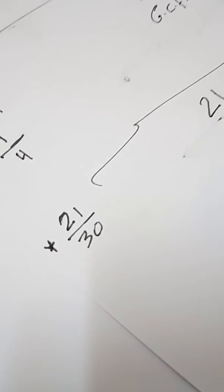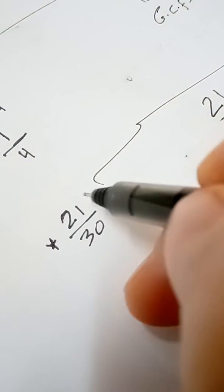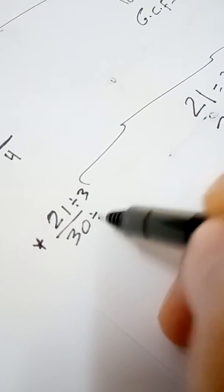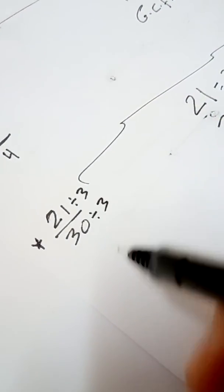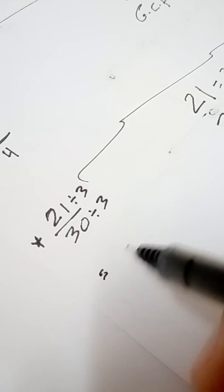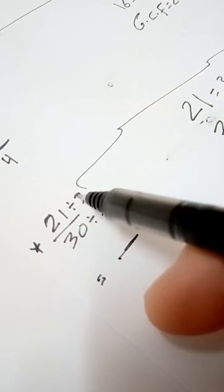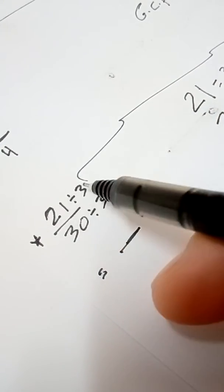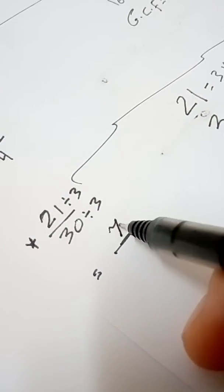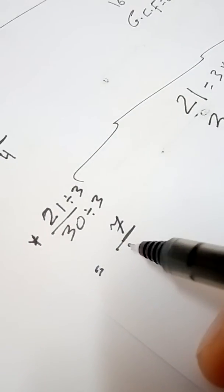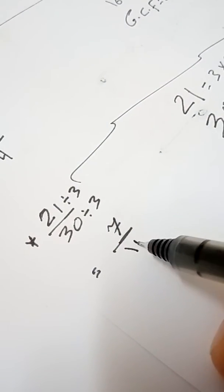Go back to the fraction and divide by 3. 21 divided by 3 equals 7, and 30 divided by 3 equals 10. So the simplest form of 21 over 30 is 7 over 10.